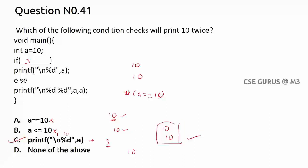In the if condition, first it prints the a value which is 10, then the condition evaluates to true, so it prints 10 again inside the block. This is the process when you write printf in an if condition. The answer is C.